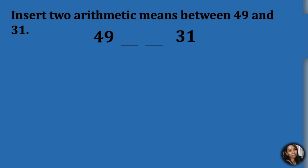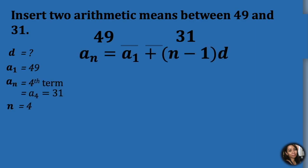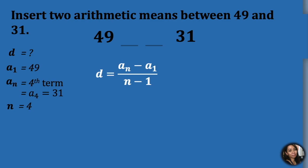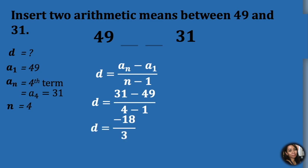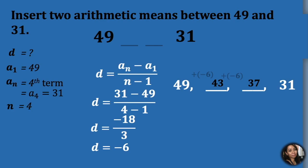To solve the problem, let's identify the given. Going back to this formula, we can derive the formula for the common difference: d equals a sub n minus a sub 1, all over n minus 1. Substituting the given values: negative 18 over 3, which equals negative 6. Upon getting our common difference, we add it to our first term. 49 plus negative 6 is 43, 43 plus negative 6 is 37, and 37 plus negative 6 is 31. We have inserted two arithmetic means between 49 and 31.